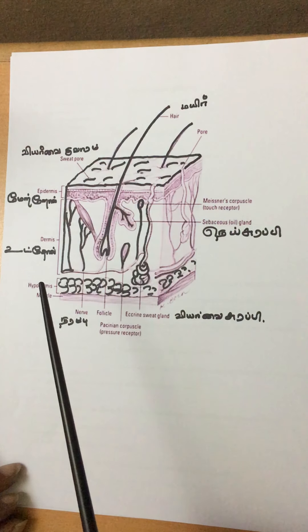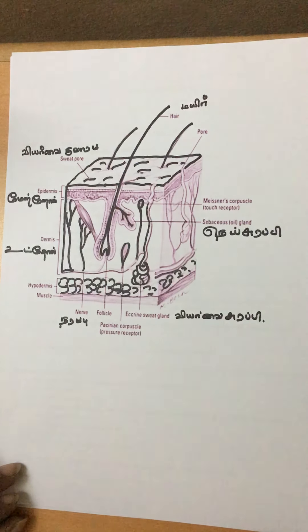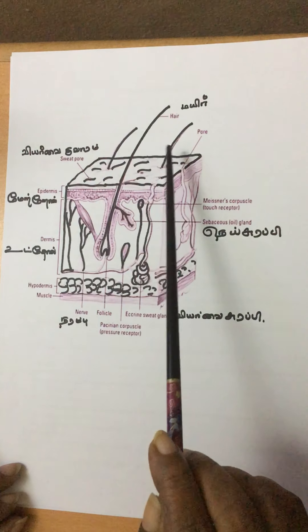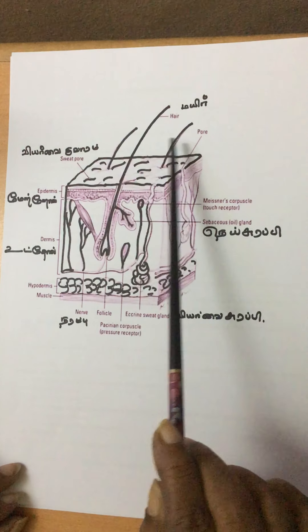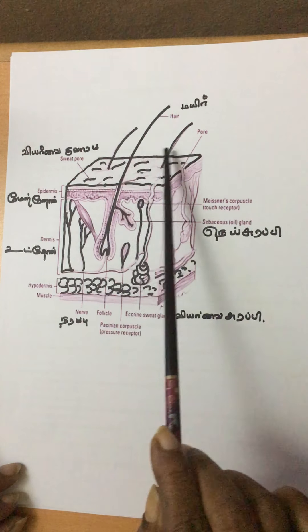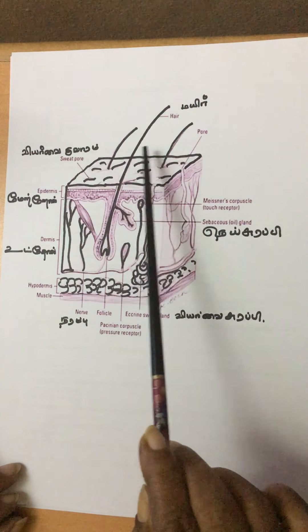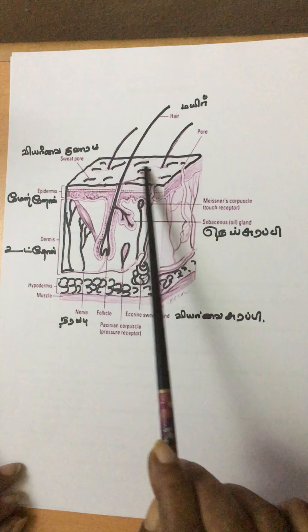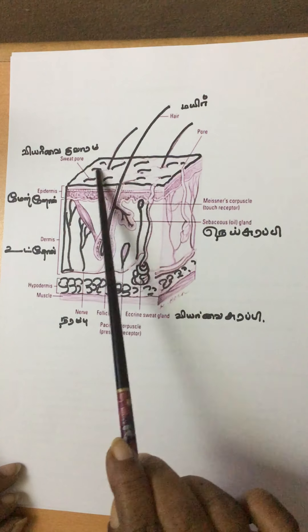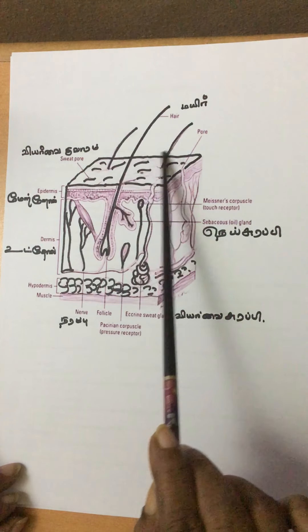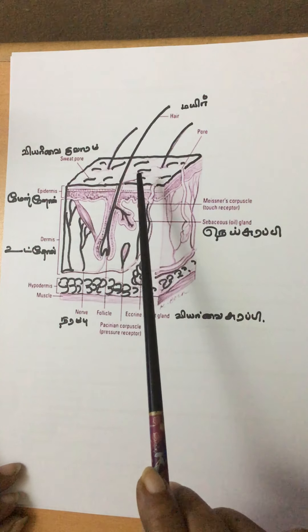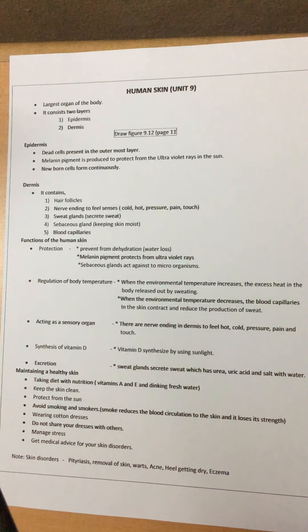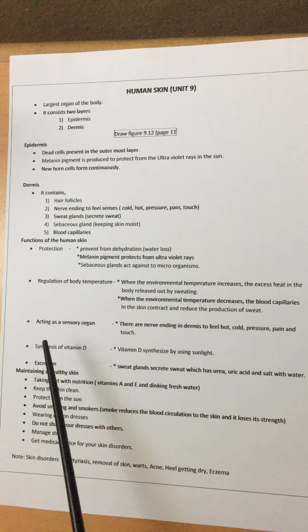Shivering also produces heat in our body during cold conditions. At that time the hairs also become erect, which traps air between the hairs, and this trapped air prevents heat from being lost from the body.